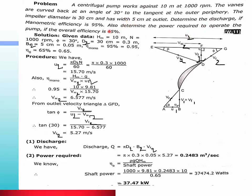Given data: H = 10m, N = 1000 rpm, θ₂ = 30 degrees, D₂ = 30 cm = 0.3m, B₂ = 5 cm = 0.05m, manometric efficiency ηₘ = 95% = 0.95, and overall efficiency ηₒ = 65% = 0.65. This velocity triangle is necessary to determine VF₂.